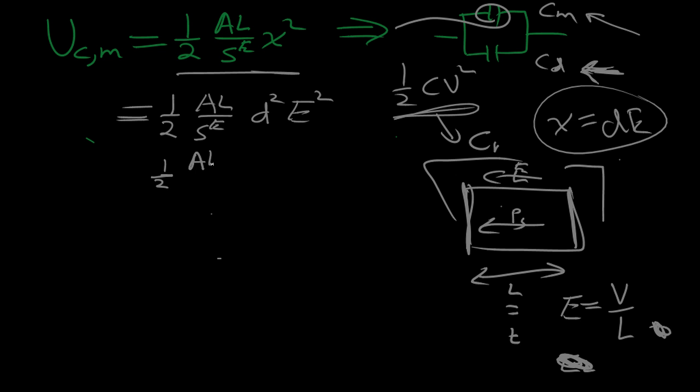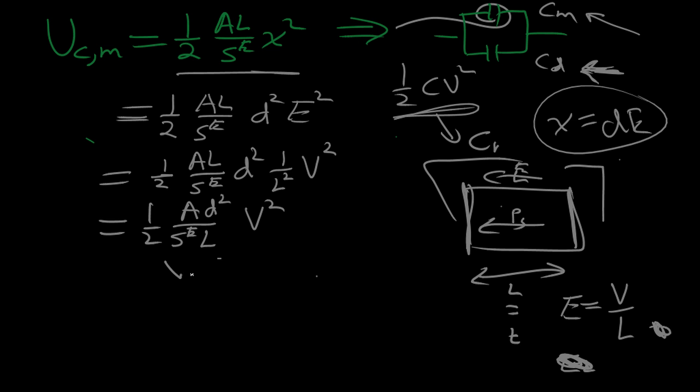So E times L. So basically we can rewrite this equation now: one half ALSE D squared one over L squared V squared. And we reduce it even further: one half A over L SE D squared V squared. So this equation right here, it's CM. So this is CM actually. This is the equivalent stored energy if the material was a capacitor. This ends up being the equivalent capacitance right here.